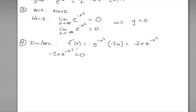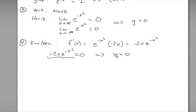To find where the derivative is zero, we note that -2x · e^(-x²) = 0. We can't make e^(-x²) equal to zero, so the only way is if -2x = 0, which gives x = 0. So x = 0 is the only place where the function can change from increasing to decreasing or vice versa.